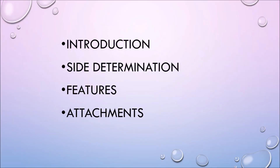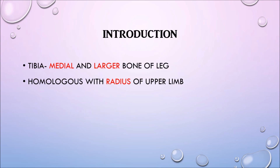So let's look at the introduction, side determination, features and attachments of the tibia. Beginning with the introduction, the tibia is the medial and larger bone of the leg. It is homologous with the radius of the upper limb.